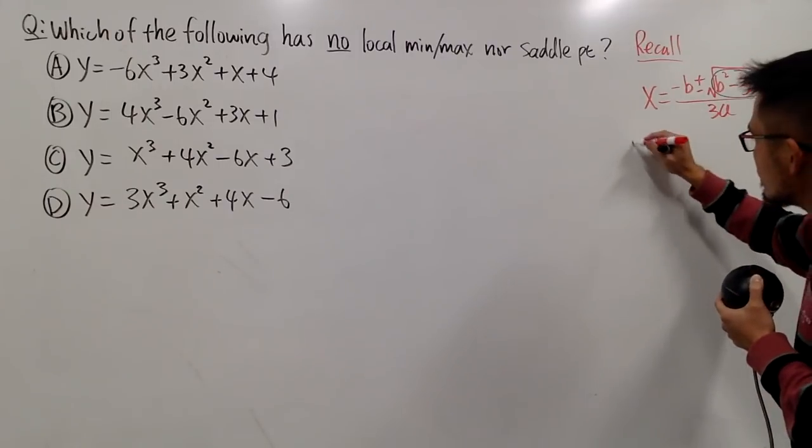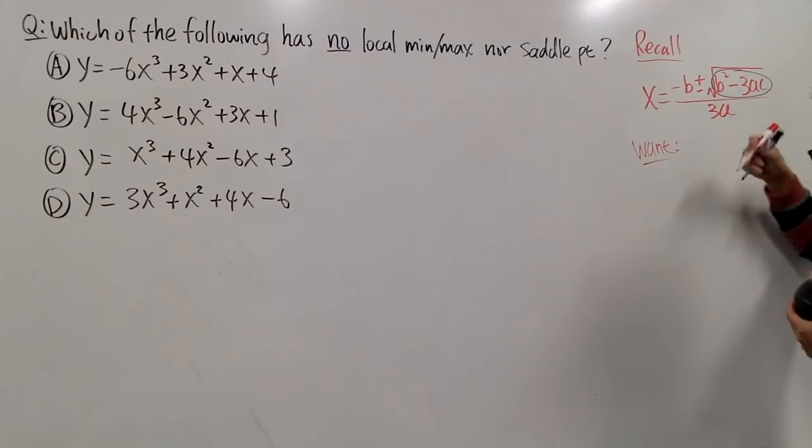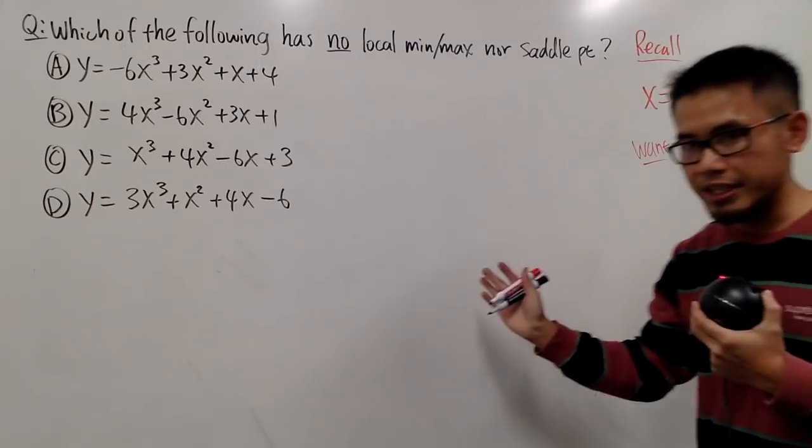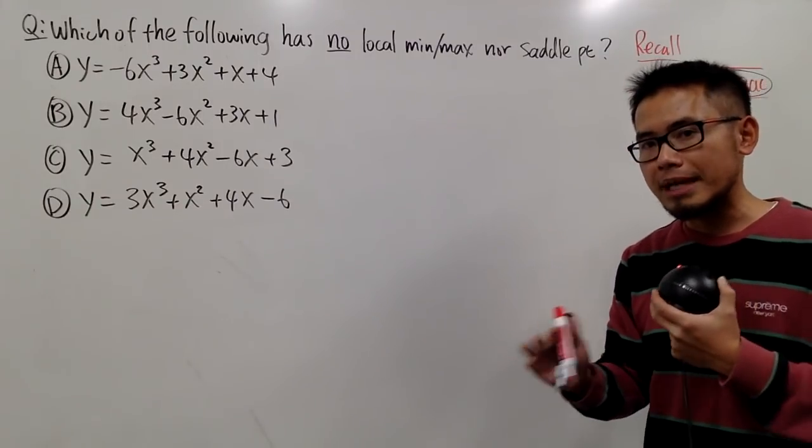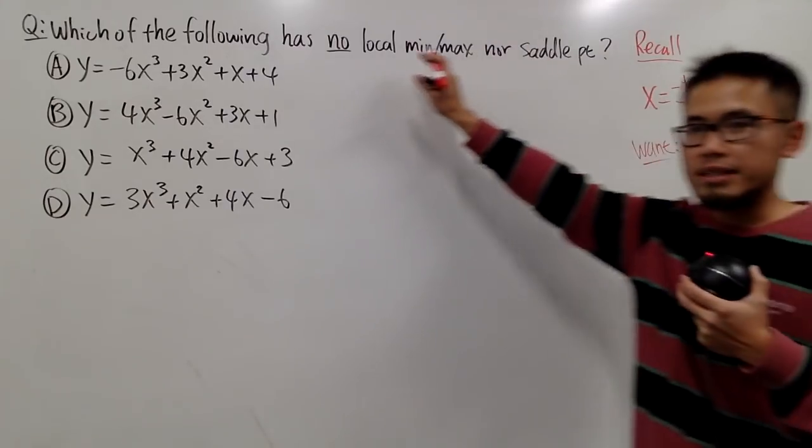If the inside of the square root is negative, this wouldn't work in real numbers. That means we don't have anything interesting. We wouldn't have any local minimum, maximum, nor saddle point. So all we want is that b squared minus 3ac to be less than 0 in this case.